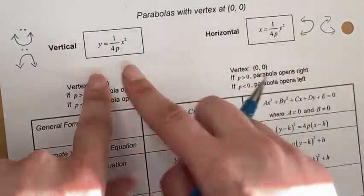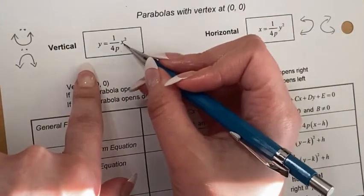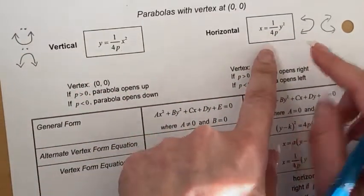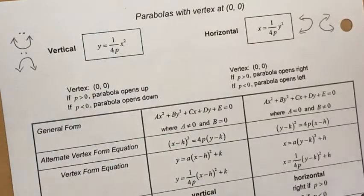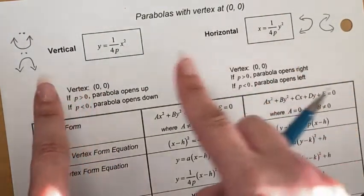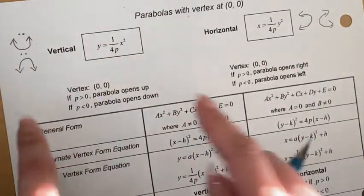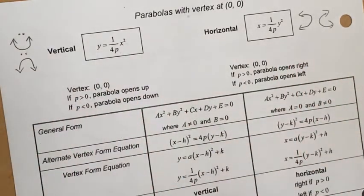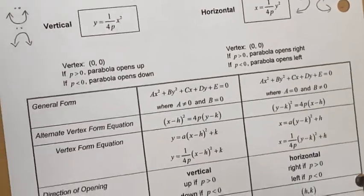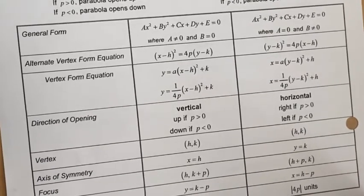The key difference between the two forms: in the vertical case, y is by itself on one side and x is the quadratic variable. In the horizontal case, x is by itself and y is squared. The vertical form looks like a typical quadratic equation, while the horizontal form is different because y is raised to the power of two.